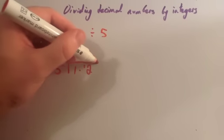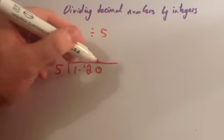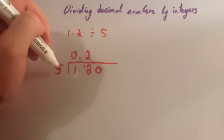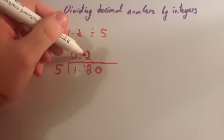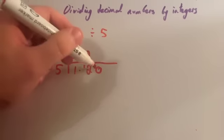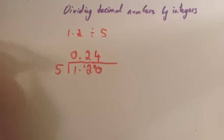Because there's a remainder of 2, we carry on the line and add an extra 0. How many 5s go into 20? 4. So it's just like a normal division.